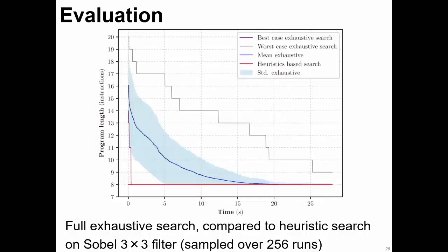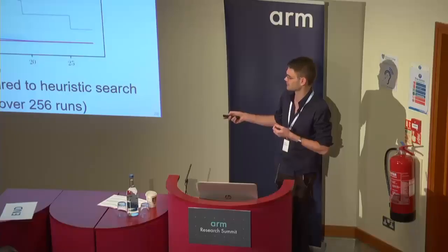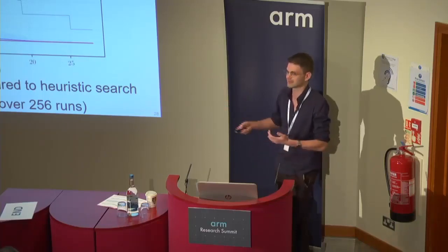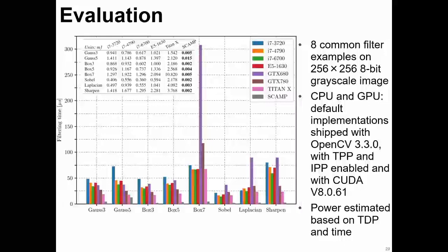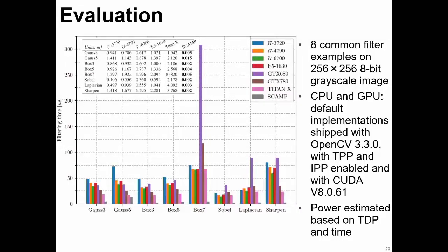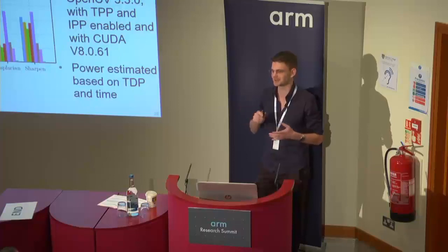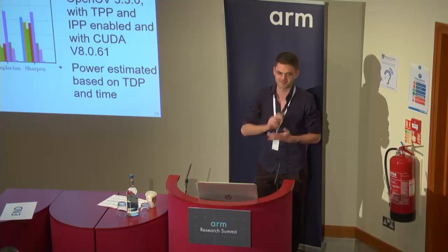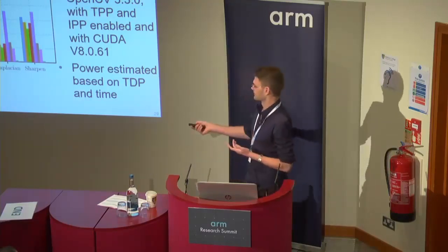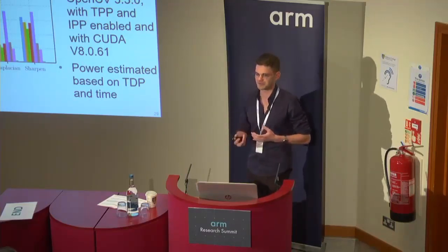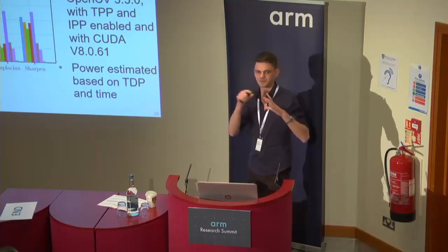For evaluation: in a fully heuristic search (red line) versus a fully exhaustive search, our heuristic helps the algorithm find the optimal solution of eight instructions almost immediately, whereas the exhaustive search takes about 20 seconds on average. The filters also perform very well — the SCAMP result is that little dot at the bottom, evaluated on well-known Gaussian, Laplacian, and Sharpener filters. This should be taken with a grain of salt since our device operates in analog fashion, adding some noise to each computation, making results noisier than GPU or CPU outputs. But the performance gains are substantial and come from the structure and arrangement of processors on the chip.